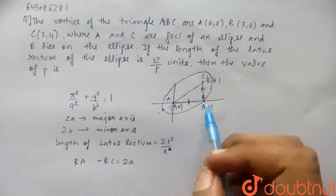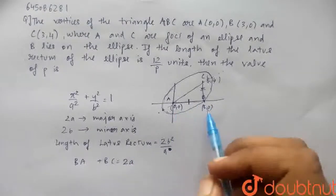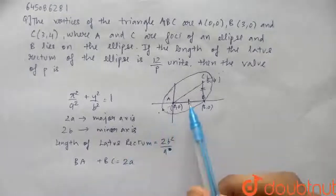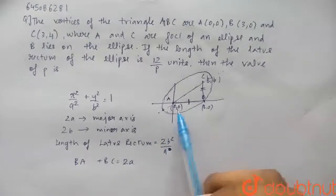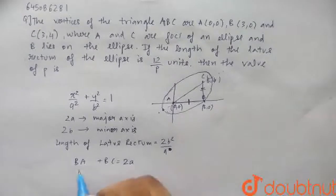So now what is the value of BA? BA is from 0,0 to 3,0. We can use distance formula or we can see in the graph. It is very easy. 0,0 and 3,0, the distance between it is 3.